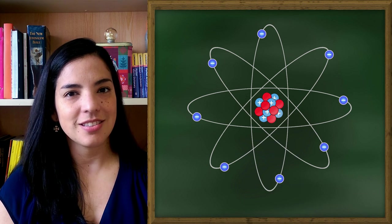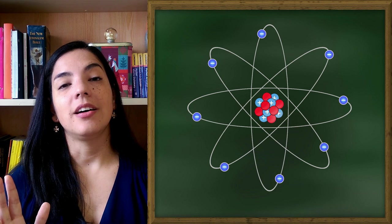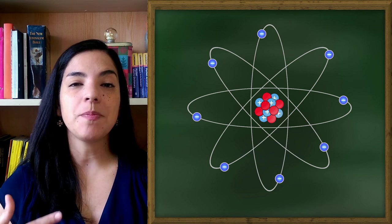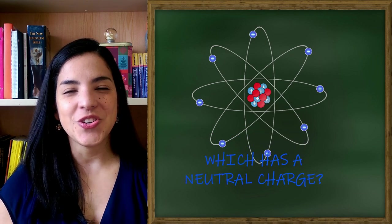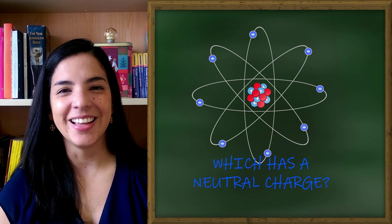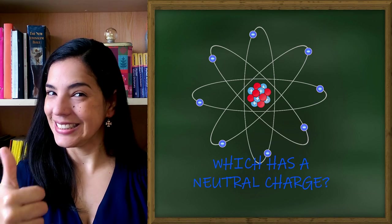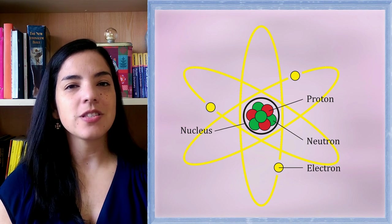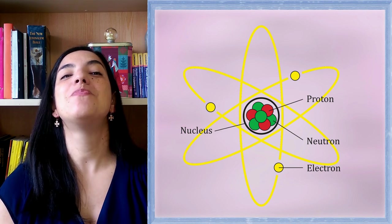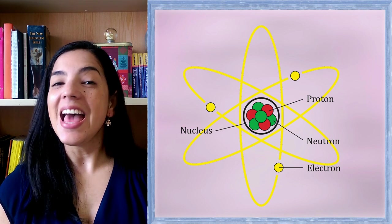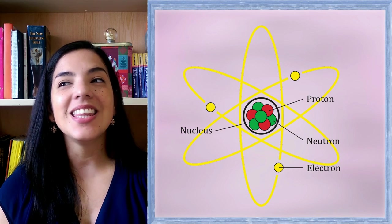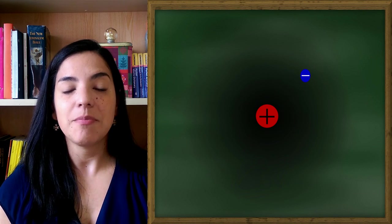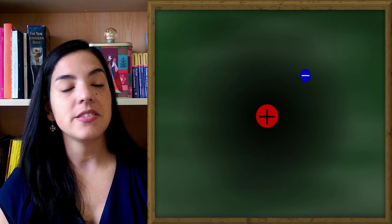The protons and the neutrons, they have a charge, and also the electrons. Some have positive charge, some have a negative charge, and some have a neutral charge. Question for you. Guess which of the three has a neutral charge? Of course, the neutrons. The neutrons have a neutral charge. So the protons have a positive charge. The electron, the electron has a negative charge.